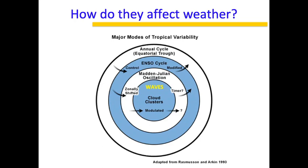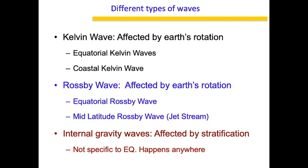The waves are the middlemen here. These waves interact with the Madden-Julian Oscillation, or perturbations from ENSO, or perturbations from the equatorial trough or ITCZ, and they help in the formation of cloud bands. In the absence of these waves, you will not have any interaction between these modes of tropical variability, and hence you will not have any cloud formation. So waves seamlessly connect these modes with the cloud bands — that is very important to understand.